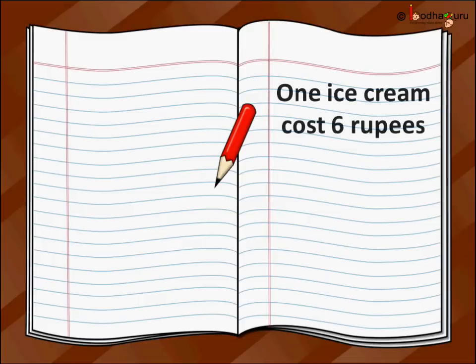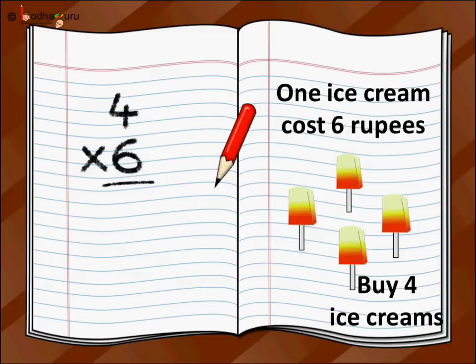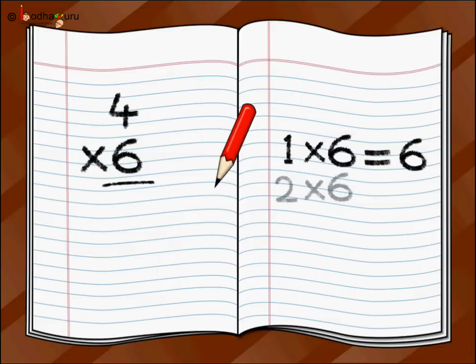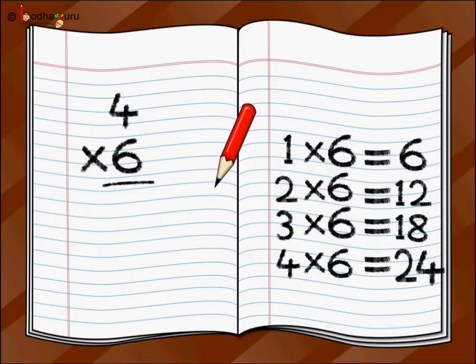Let us take another example. Say, the cost of 1 orange ice cream is 6 rupees. How much money do we require to buy 4 ice creams? Look at this problem this way: how many 6s are required, because the cost of 1 ice cream is 6 rupees? So it is 4 times 6. We write 4, then 6, and the multiplication or cross sign. We would use the multiplication table of 6: 1 six is 6, 2 sixes are 12, 3 sixes are 18, and 4 sixes are 24. So 4 times 6 is 24, and we write 24 here.